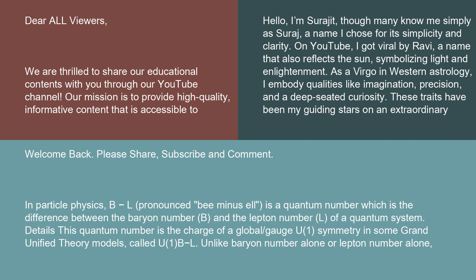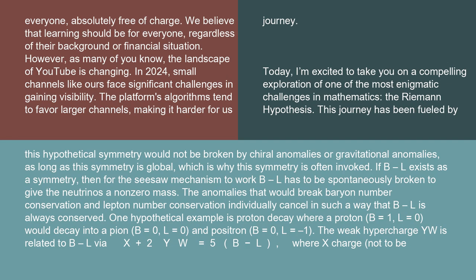Unlike baryon number alone or lepton number alone, this hypothetical symmetry would not be broken by chiral anomalies or gravitational anomalies, as long as this symmetry is global, which is why this symmetry is often invoked. If B-L exists as a symmetry, then for the seesaw mechanism to work, B-L has to be spontaneously broken to give neutrinos a non-zero mass. The anomalies that would break baryon number conservation and lepton number conservation individually cancel in such a way that B-L is always conserved.